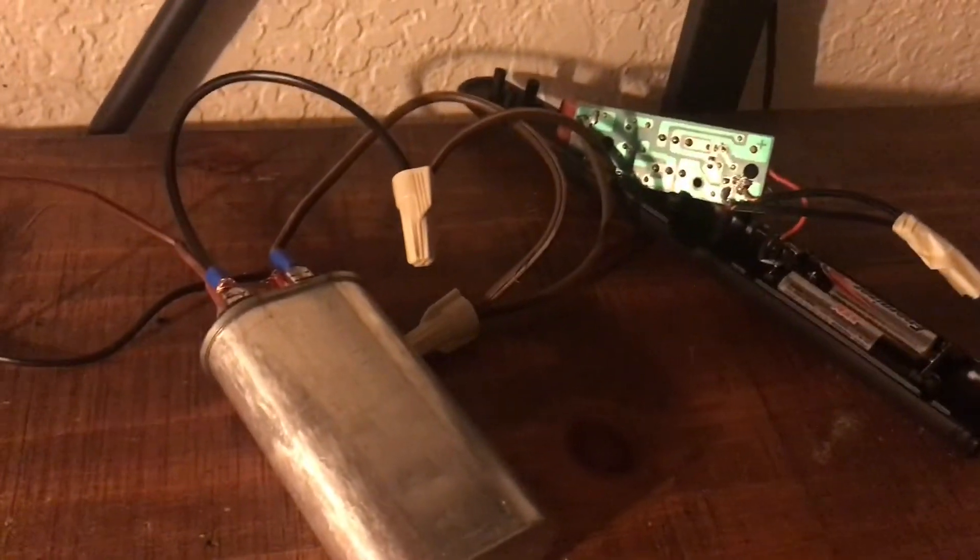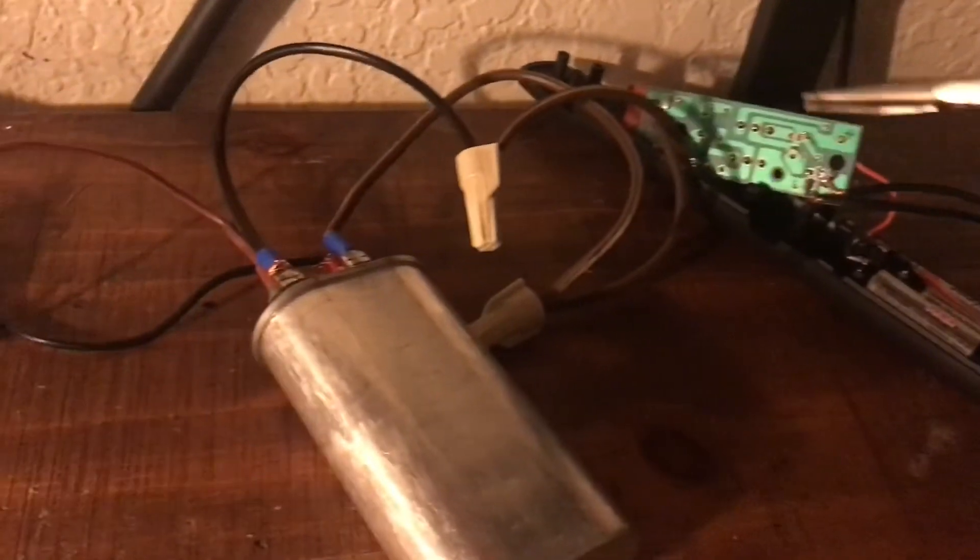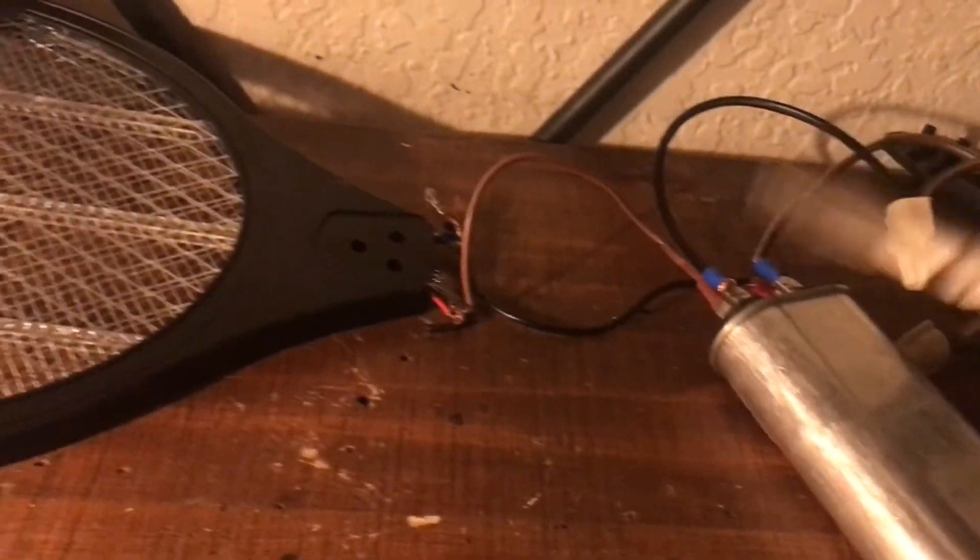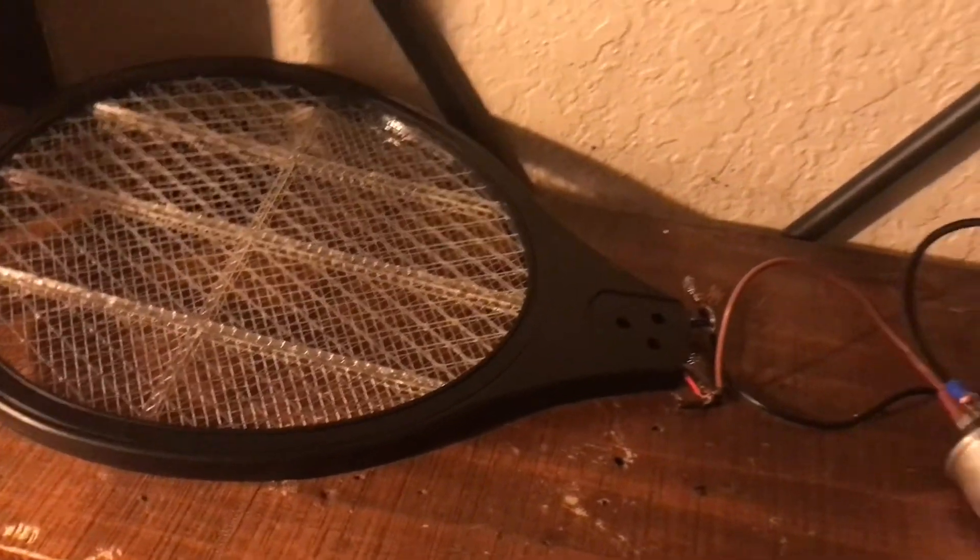All right, so here's the completed driver. I feed three volts to this charge circuit. The charge circuit charges up the blue capacitor and the red capacitor. That energy goes over to this huge capacitor and then goes through wires to the grid. So let's charge the circuit and see some sparks.